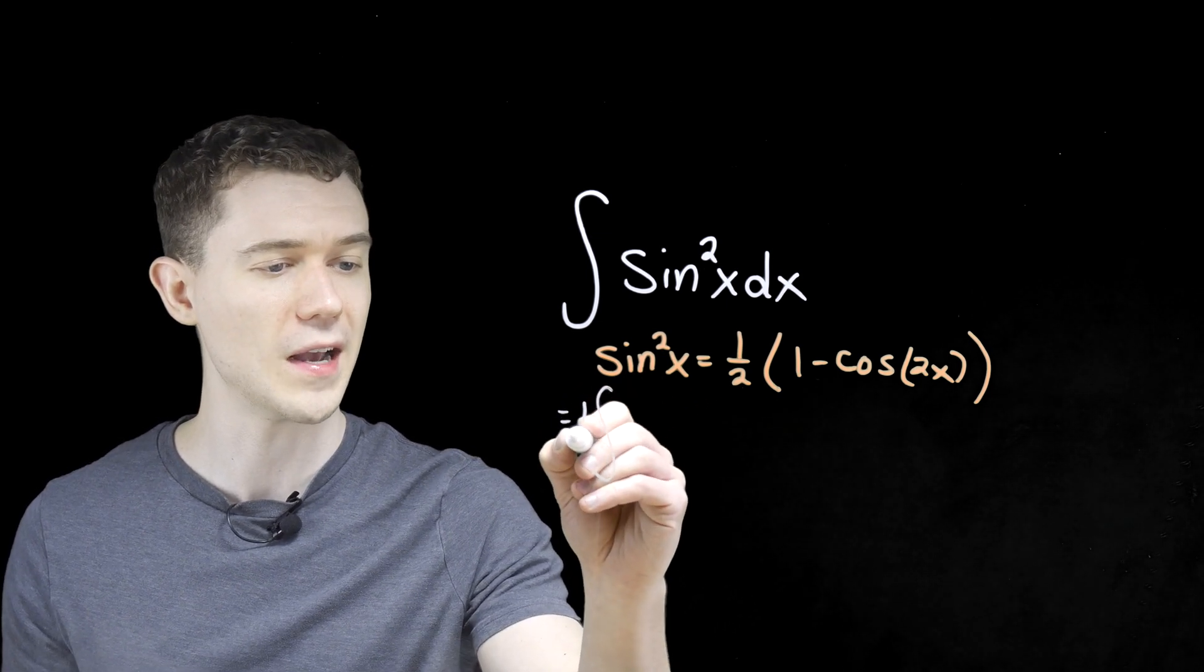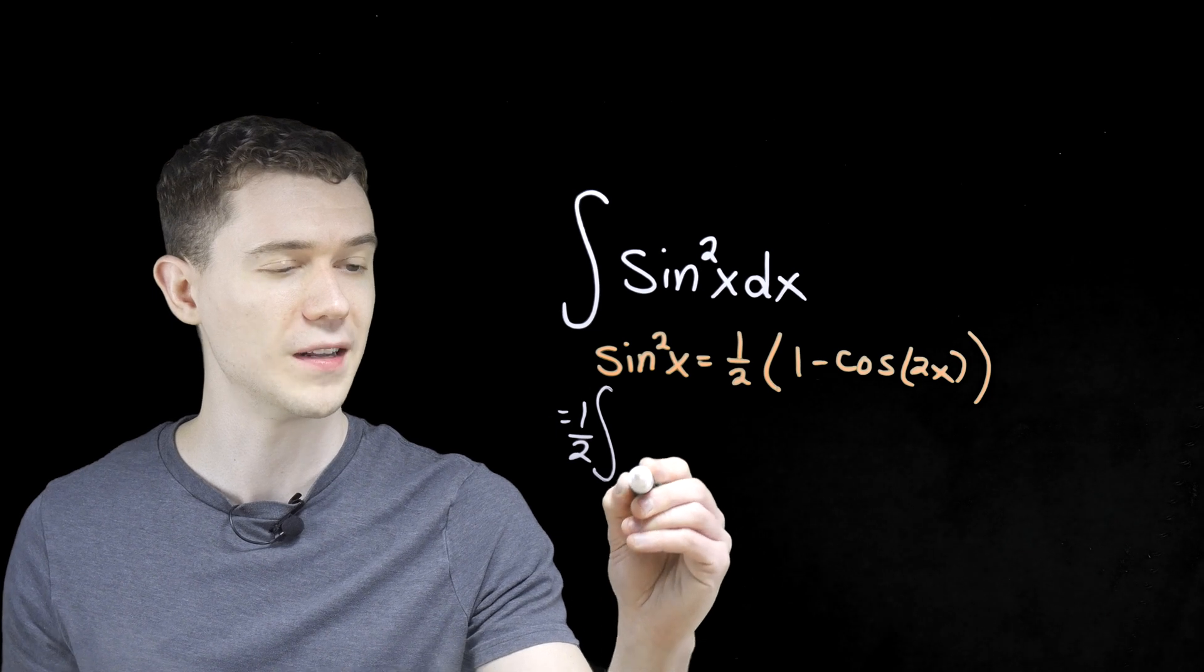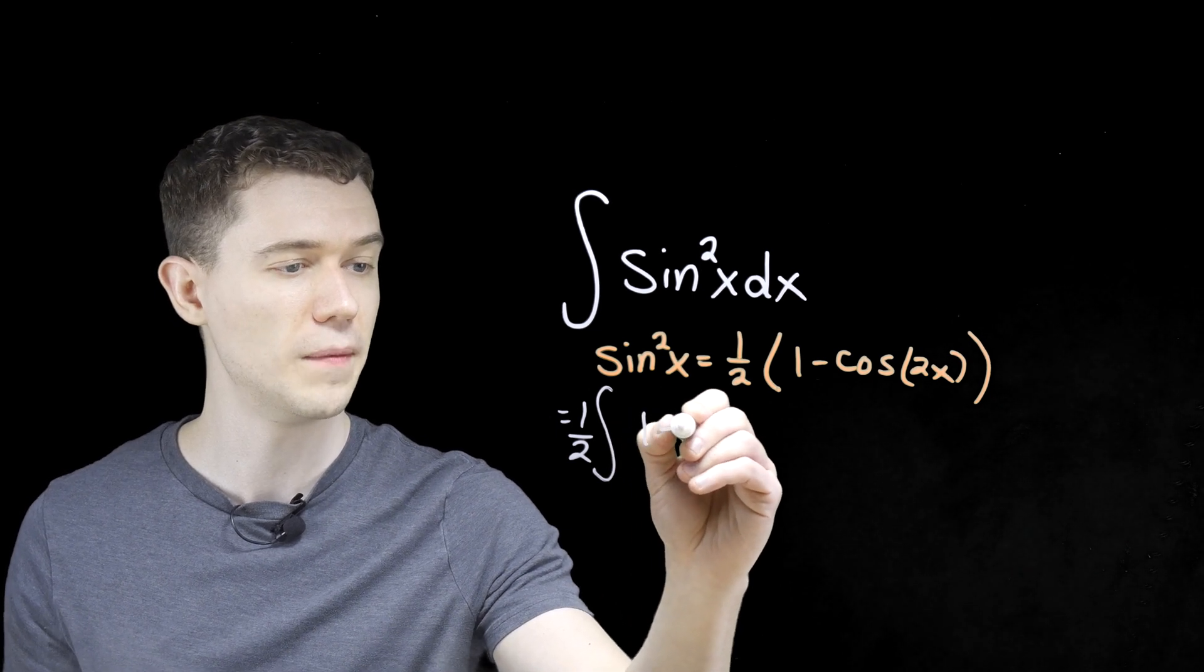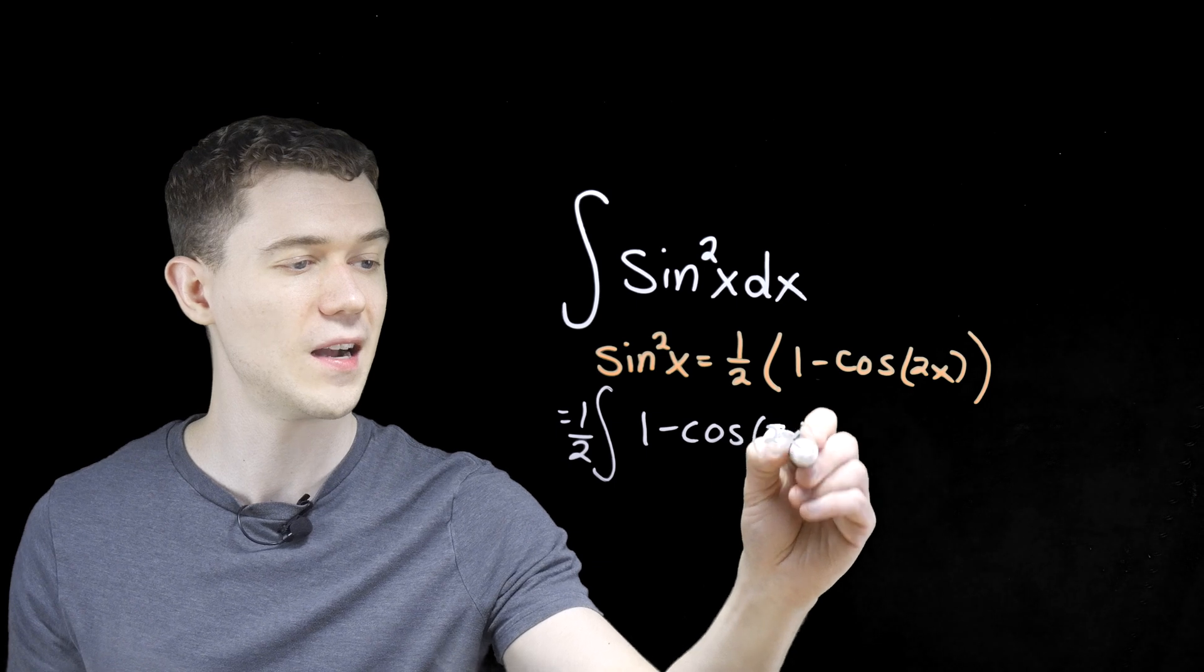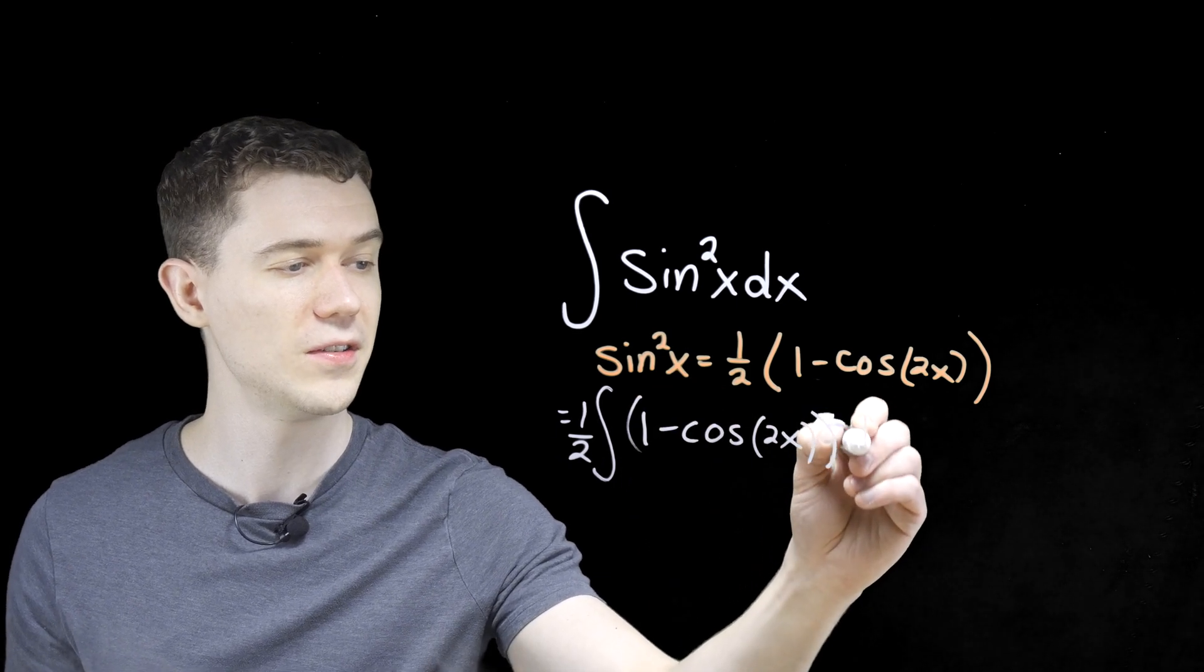So let's rewrite our integrand. And I'll just take this one-half on the out front. I can pull constants out. So it's one minus cosine of 2x inside my integral. Still need dx.